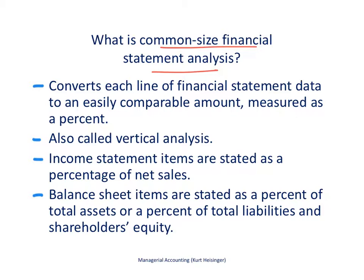This is also called vertical analysis, and what that means is vertically — here's your vertical line — we have these different accounts vertically, and we're going to take these different accounts and figure out a percentage. For example, on the income statement we'll look at cost of goods sold as a percentage of net sales, so that's why it's called vertical analysis. We're going to take each line item and express it as a percent of something vertically.